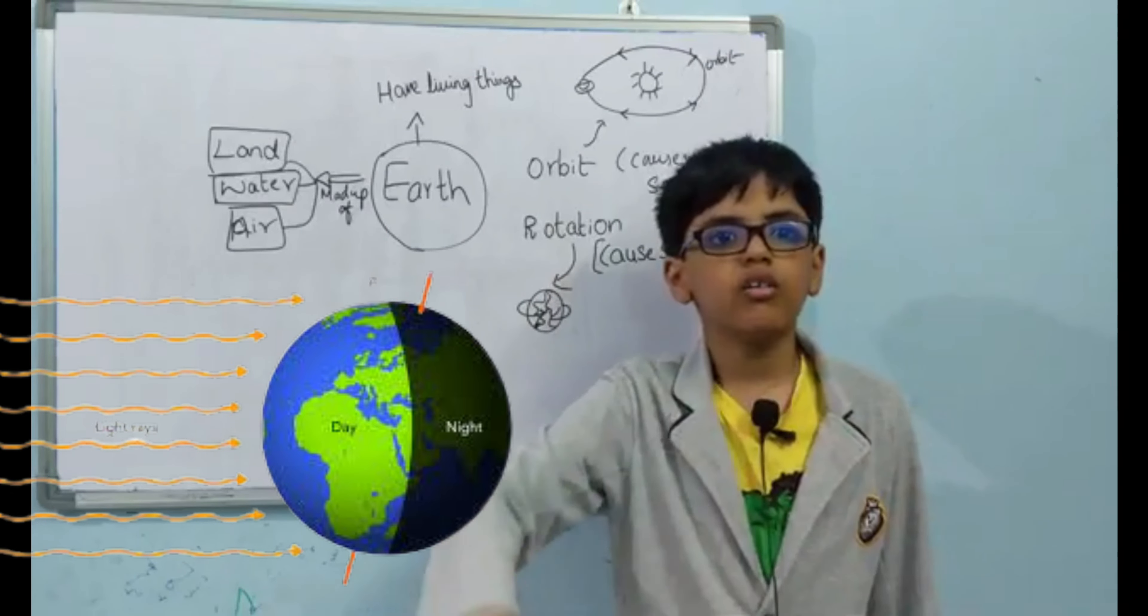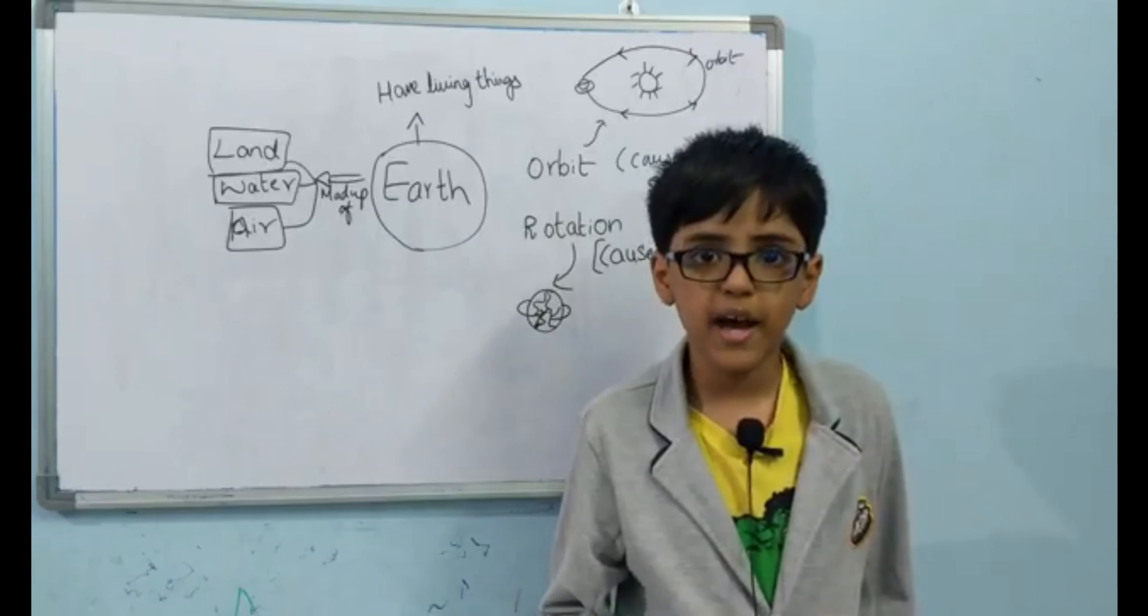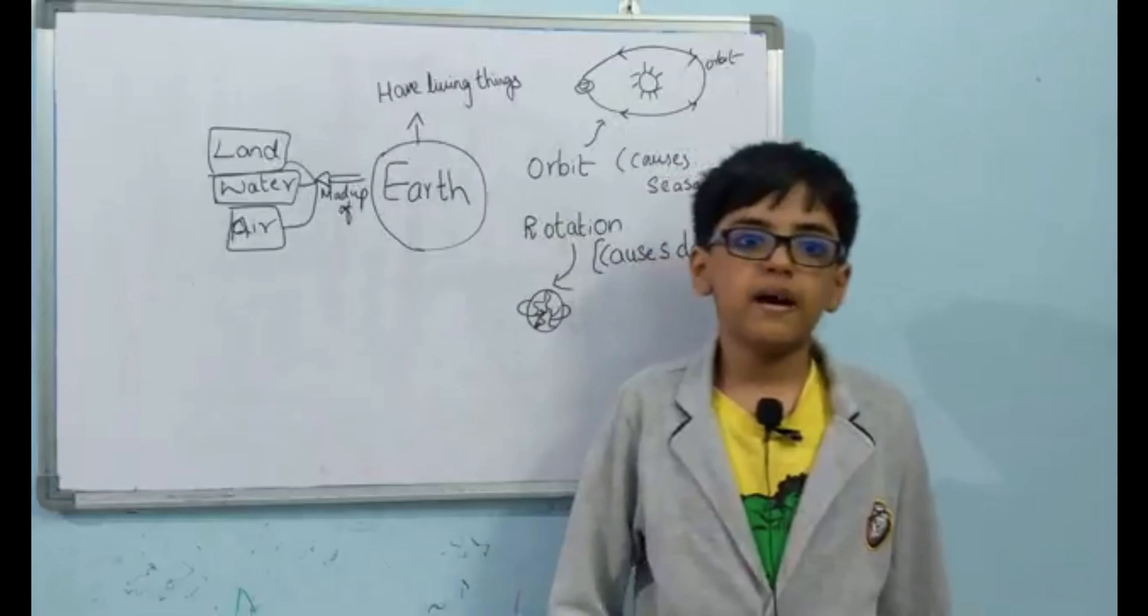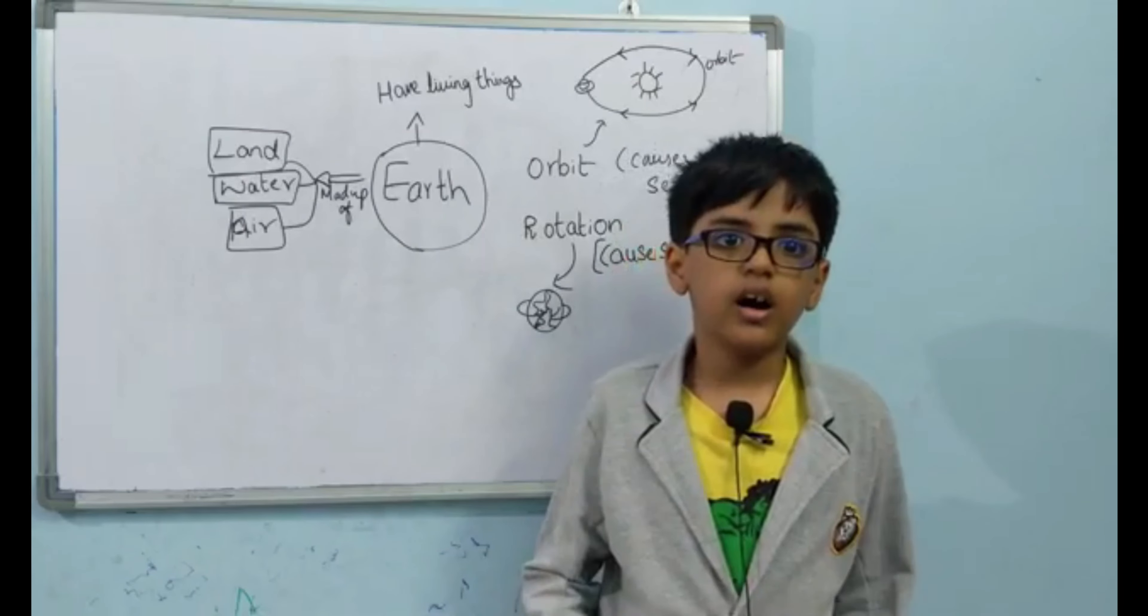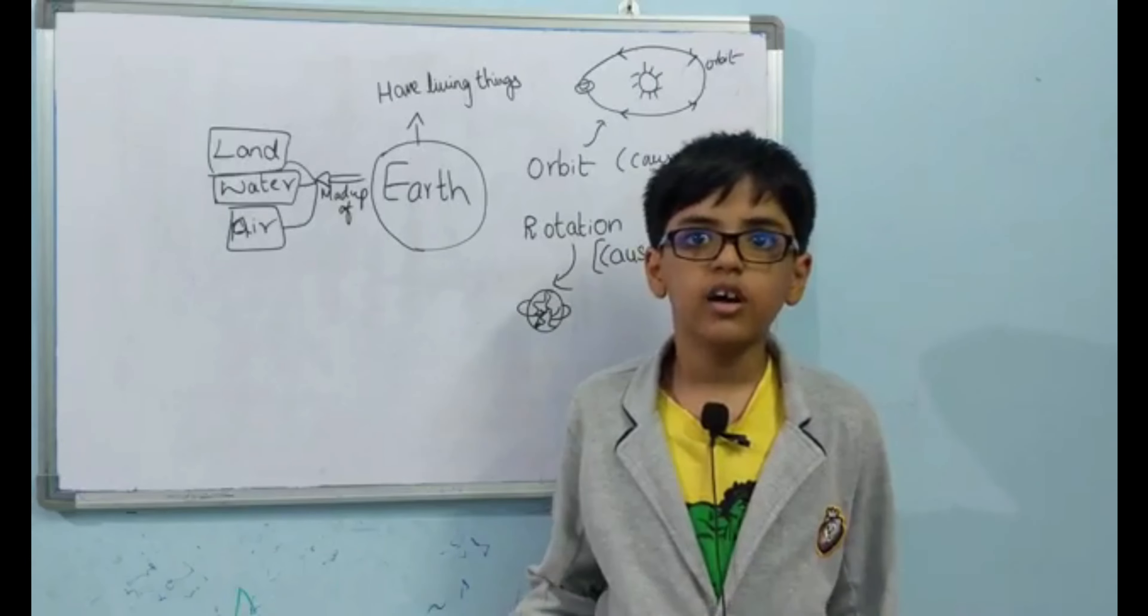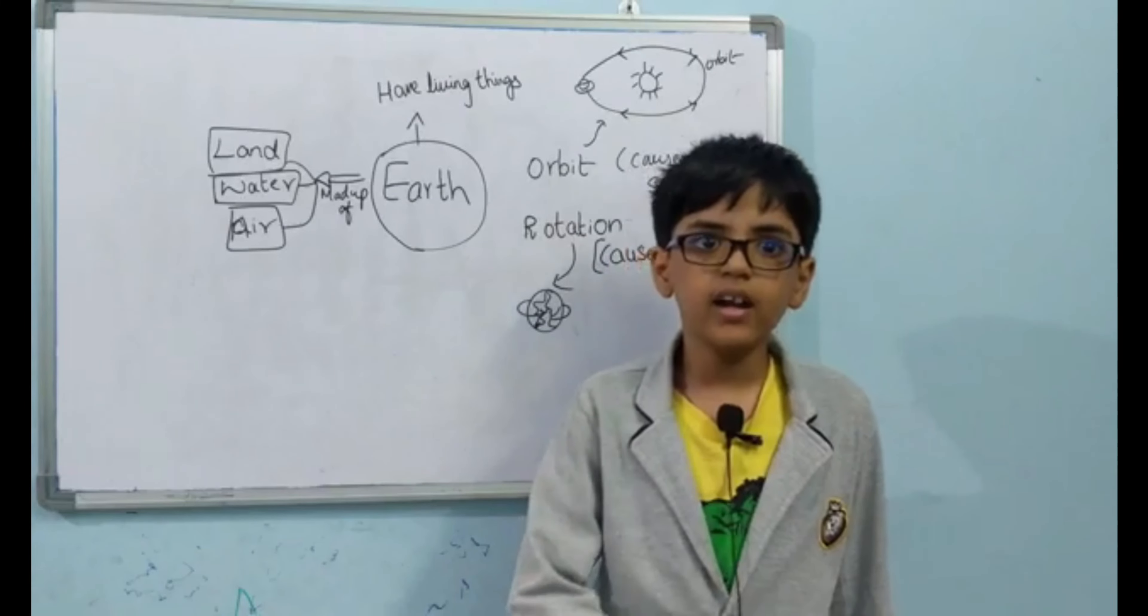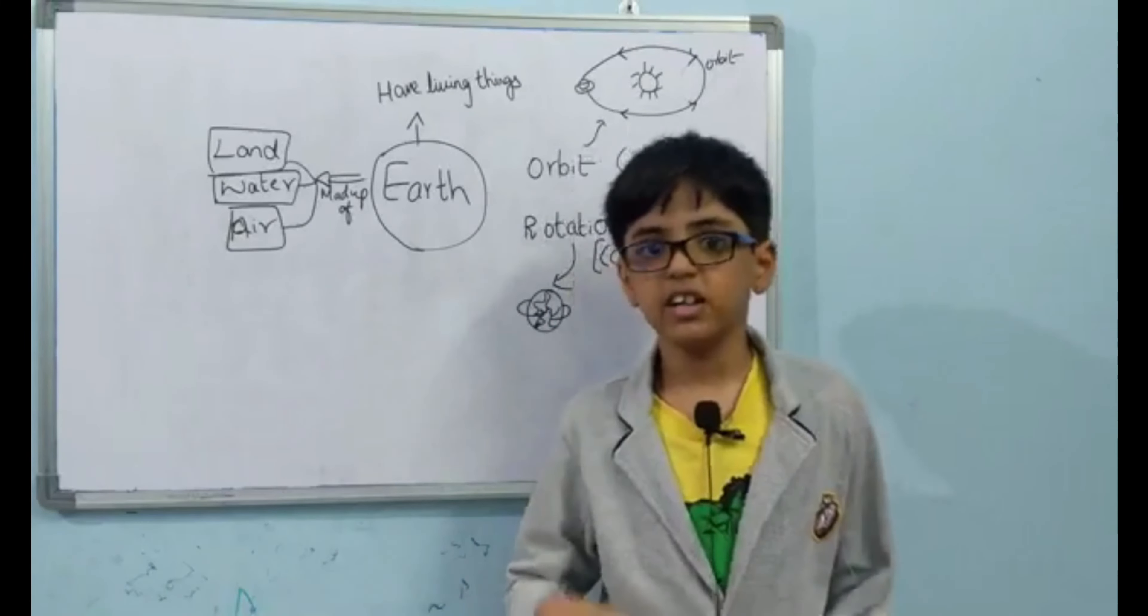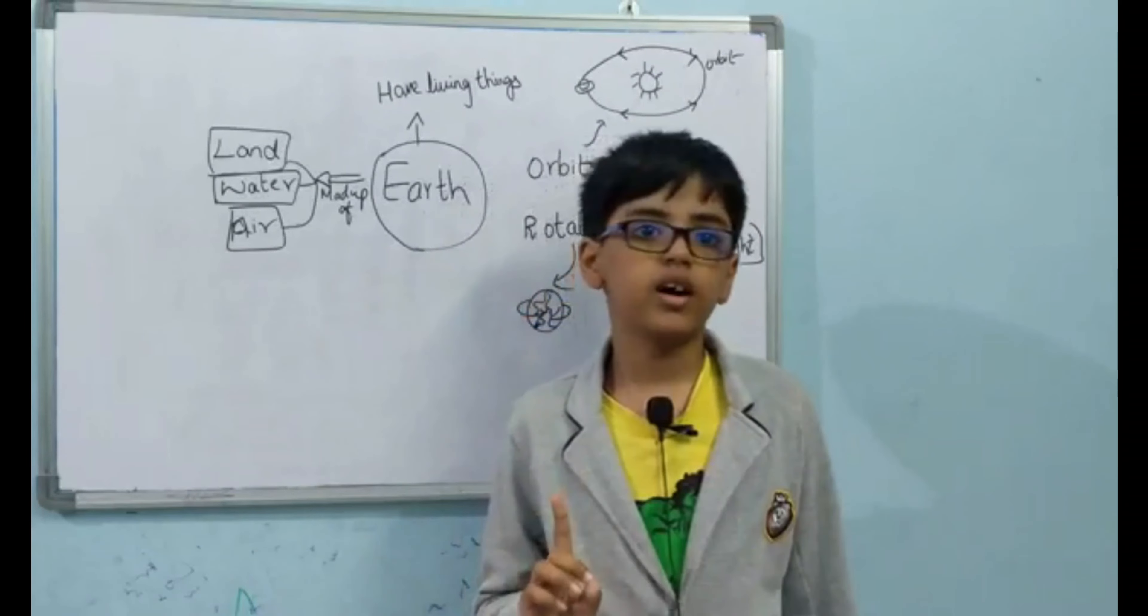Earth rotates on its imaginary line. But Earth moves west to east. The imaginary line that Earth rotates is called the Earth's axis. Earth's axis causes events. When the Earth rotates, it takes 24 hours, which means one day for Earth to complete one rotation.